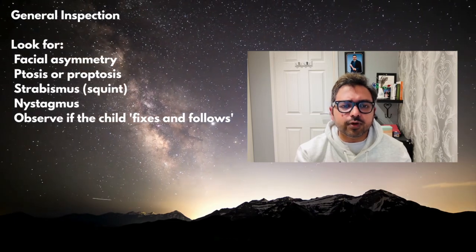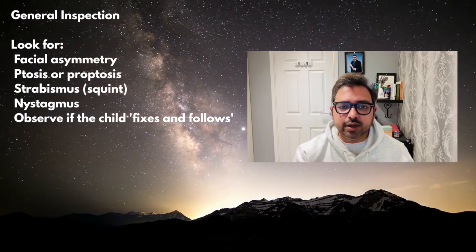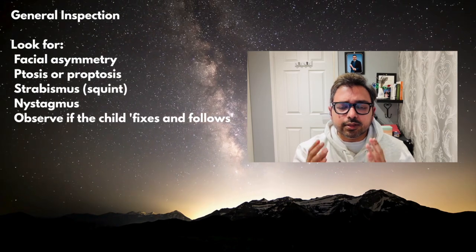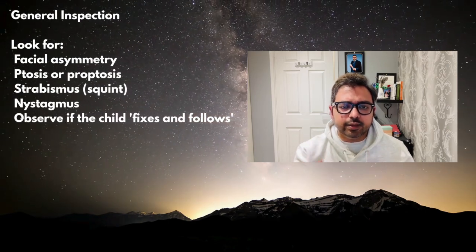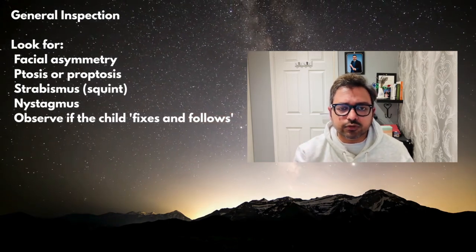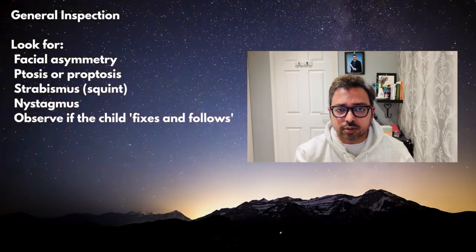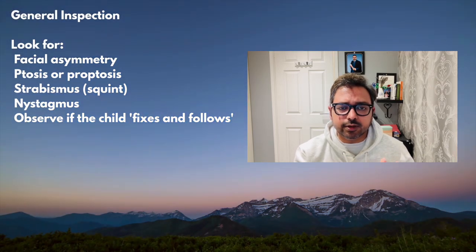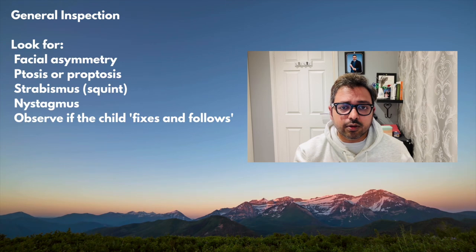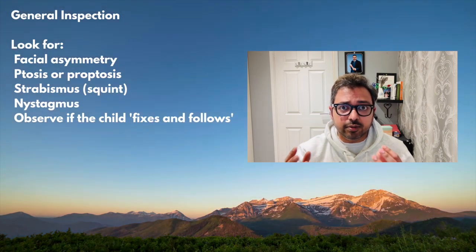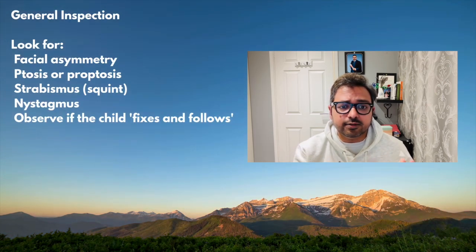Look at the child's face. Is there any facial asymmetry? Then look at the eyelid — is there any ptosis or proptosis? Then check the position of the eyeball — is there any strabismus or squint, or is the eyeball moving as in nystagmus? Observe if the child can fix and follow.